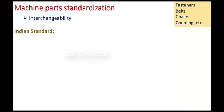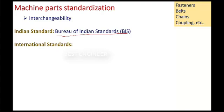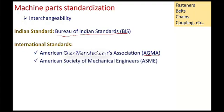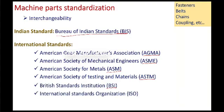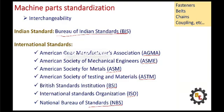Let's see the different types of standards. In Indian standards, we are following Bureau of Indian Standards, BIS, International Standards, American Gear Manufacturing Association, AGMA, American Society of Mechanical Engineers, ASME, American Society for Metals, ASM, American Society of Testing and Materials, ASTM, British Standards Institute, BSI, International Standards Organization, ISO, and National Bureau of Standards, NBS. These are the number of standards we are following.